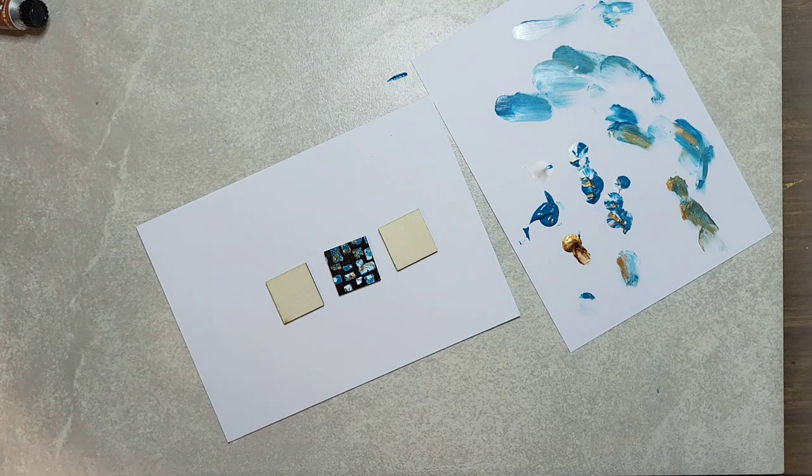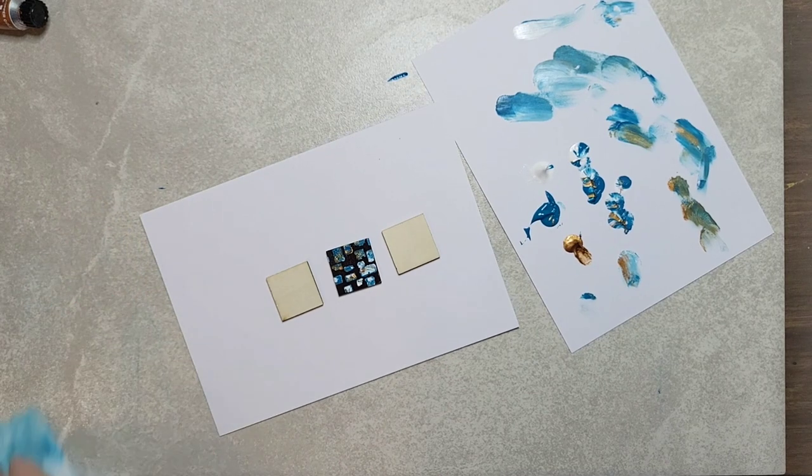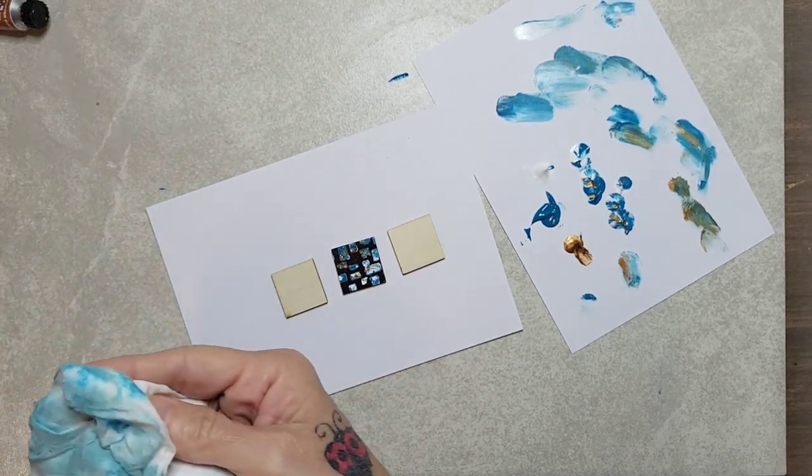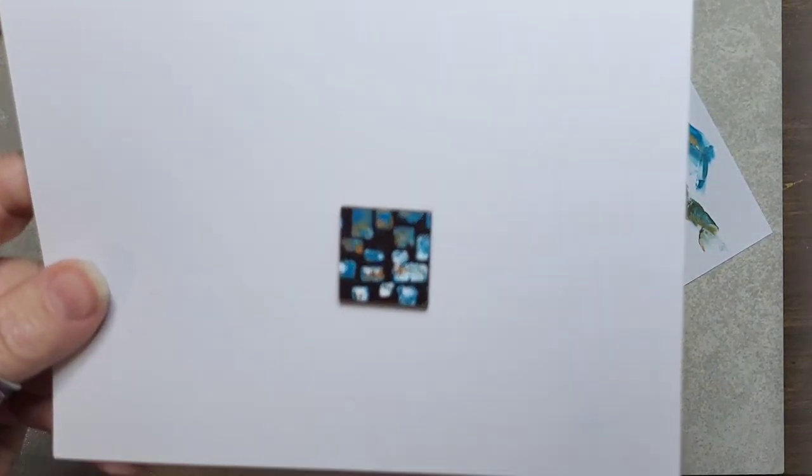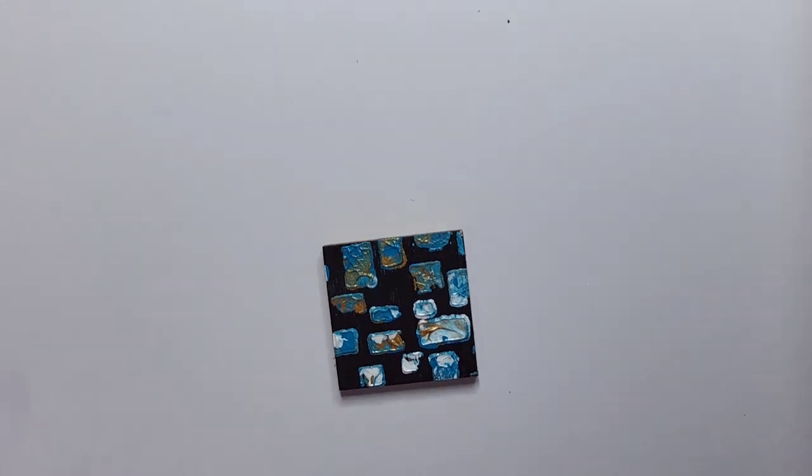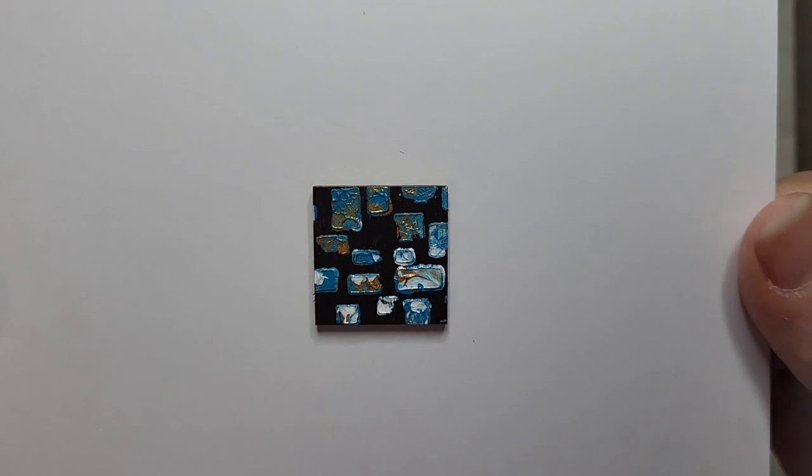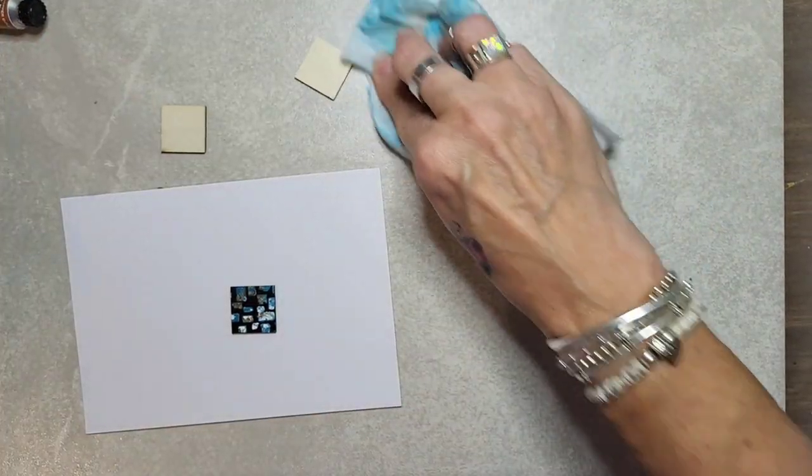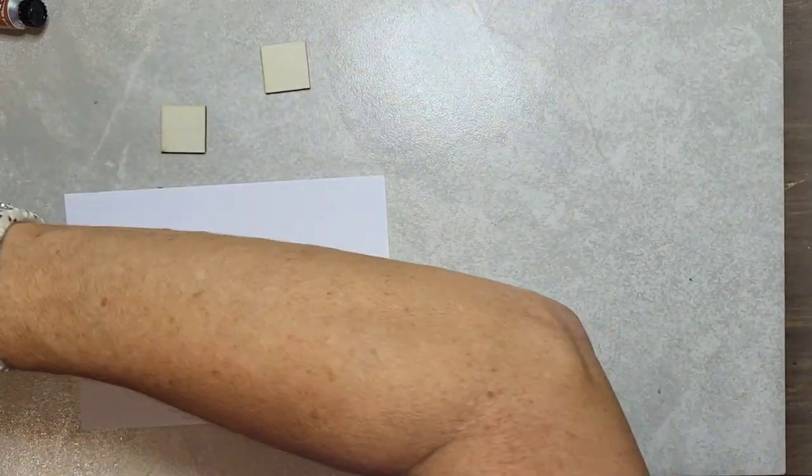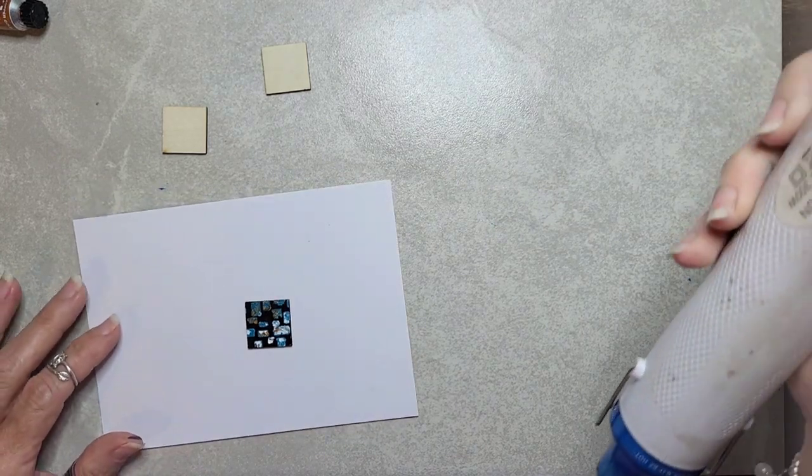So then just carefully lift it off and you will have, make sure you wipe off your stencil. It got a little schmutzed but that's okay. This is how it looks if you guys can see that. Okay, so I'm going to let that dry for a minute. I'm actually going to use my heat gun to dry it off.